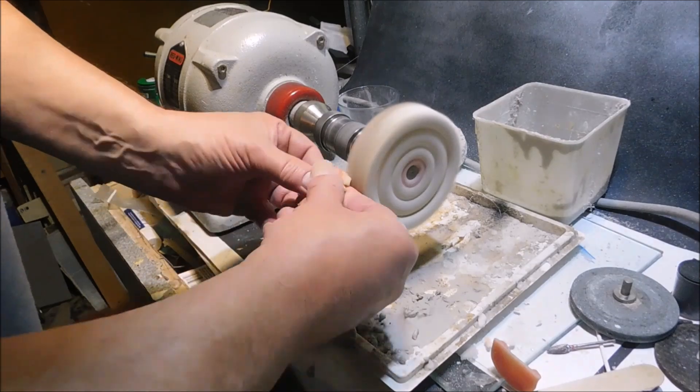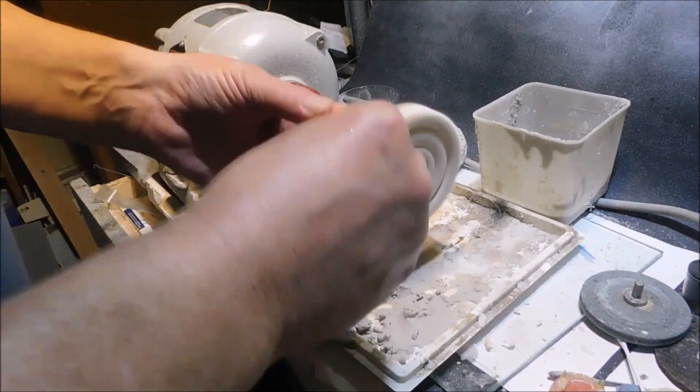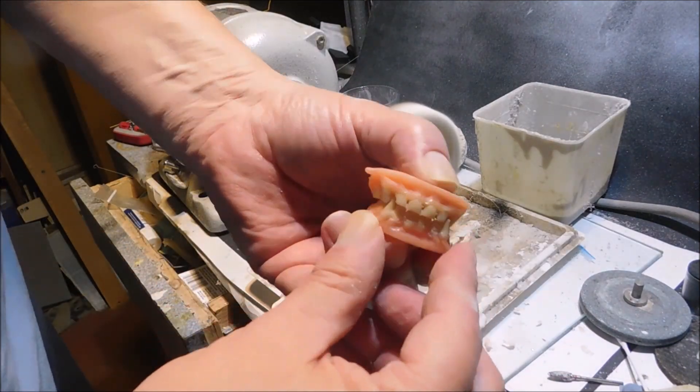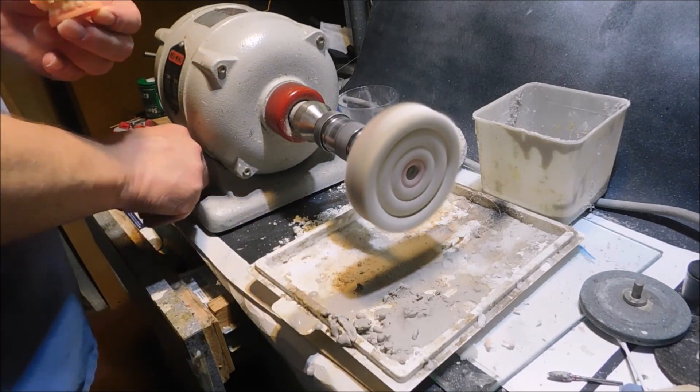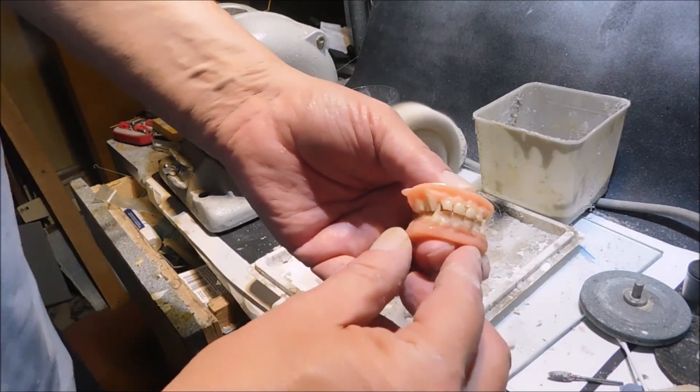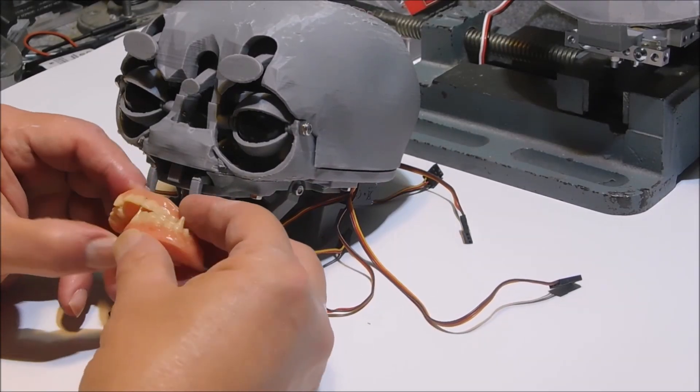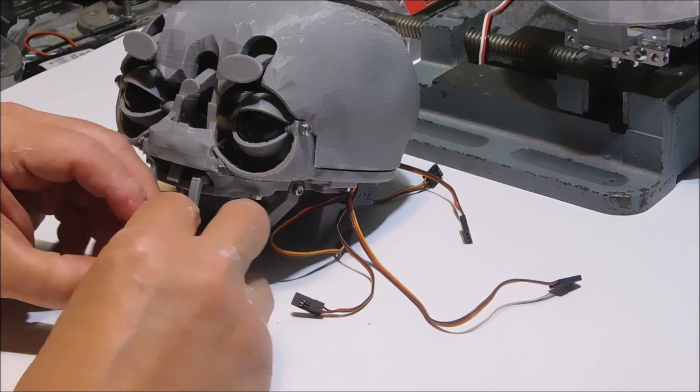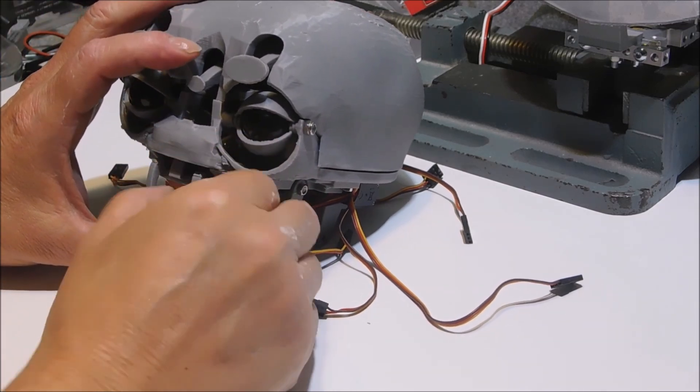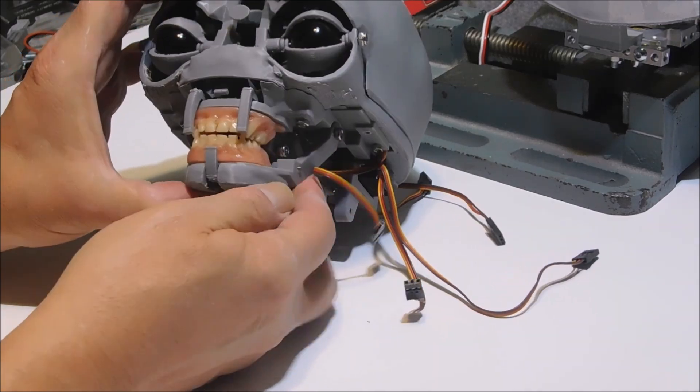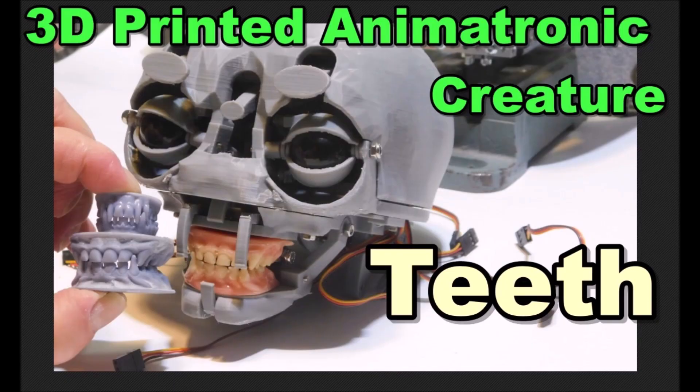It looks like we have some creature teeth for the animatronic. Now we're going to fit them, probably need to make some adjustments with the bite. I just put these teeth together and slide them into place. I hope you all enjoyed this and it helps. Here they are - I hope you like them. Thanks for all the subscribers, comments, and thumbs up!